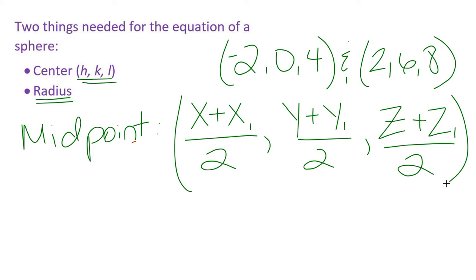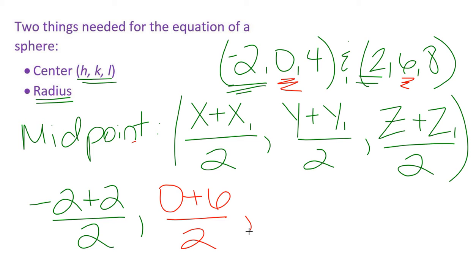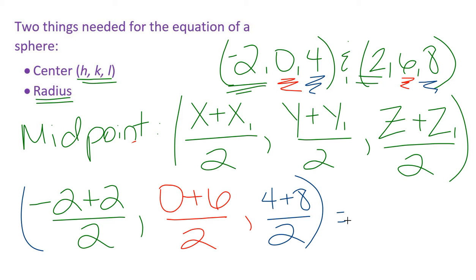So to find the midpoint in three dimensions: looking at our x coordinates, negative two plus two divided by two gives us zero. For the y's, zero plus six divided by two gives us three. For the z's, four plus eight divided by two gives us six. So our center is (0, 3, 6).